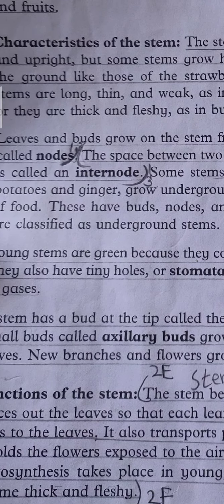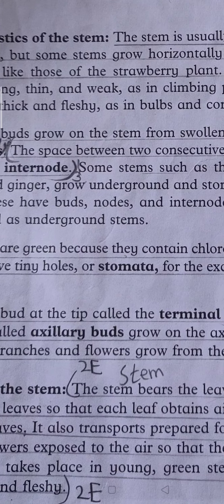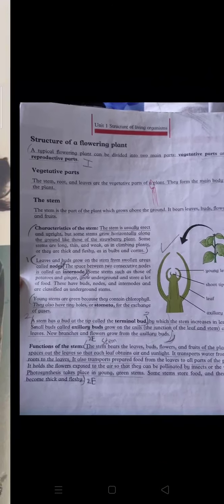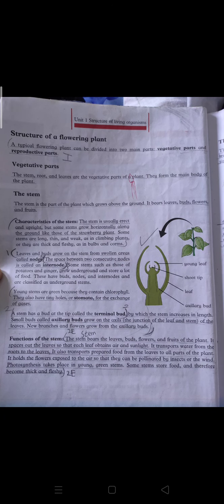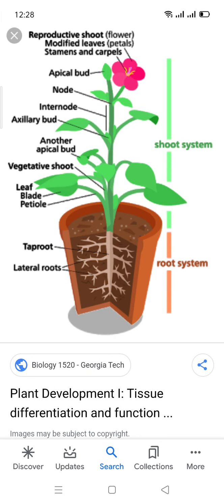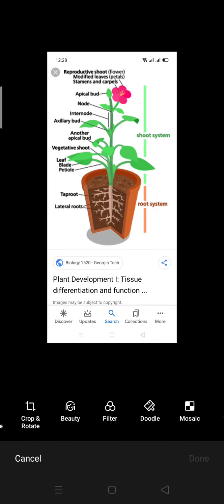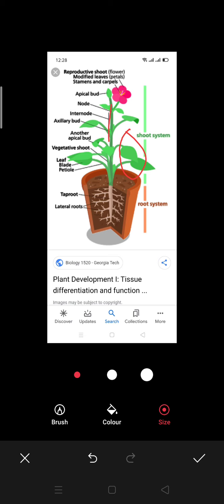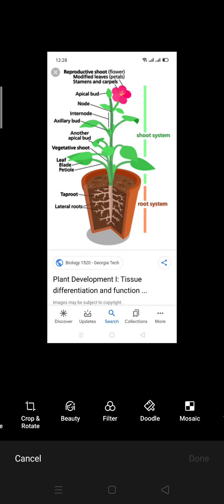Terminal buds increase the length and height. Small buds called axillary buds grow on the axils. As I have told you, what are the axils? This is the axils, this is the leaf, this is the stem. This is the axils. New branches and flowers grow from the axillary buds.